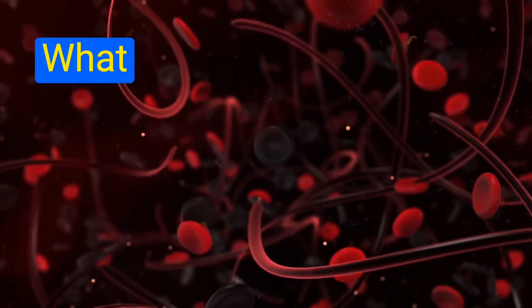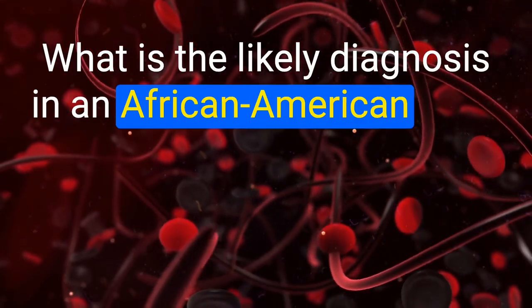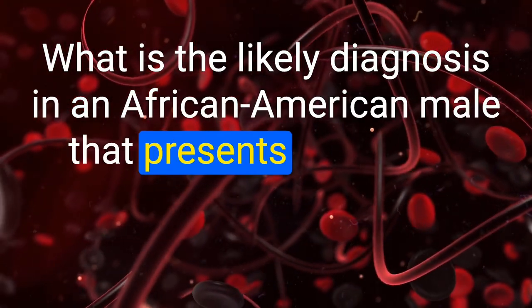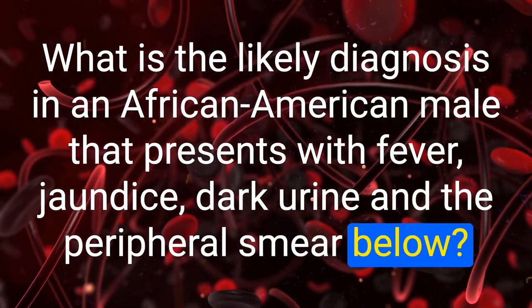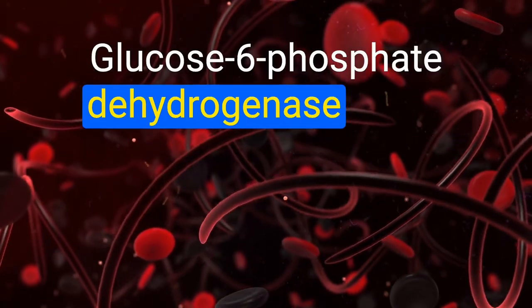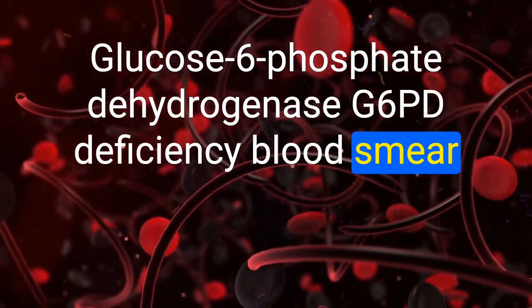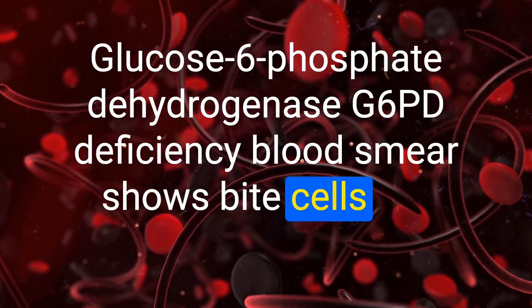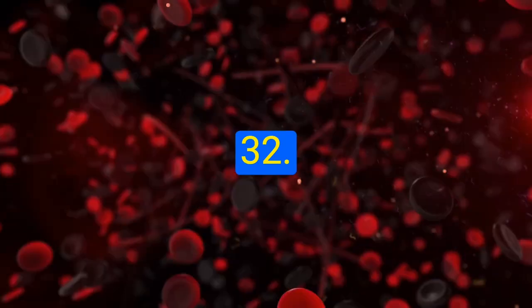What is the likely diagnosis in an African-American male presenting with fever, jaundice, dark urine, and bite cells on peripheral smear? G6PD deficiency. Blood smear shows bite cells and Heinz bodies.